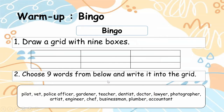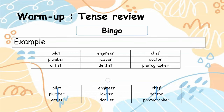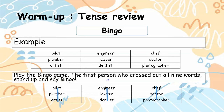Choose 9 words from below and write them into the grid. For example, a sample like this. Then play the bingo game. The first person who crosses out all 9 words stands up and says bingo.